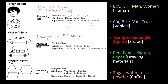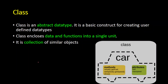We can also have another class called polygon — multi-shaped objects — where all shapes come under a common category. But each shape has its own property, attributes, and operations. A class is an abstract data type because it involves different data types and encloses data and functions into a single unit. Under one class name, we have a set of similar objects — class is a collection of similar objects.